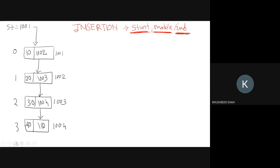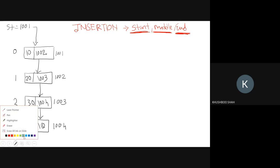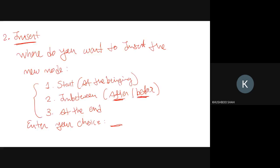Let's start with the first operation — inserting at the beginning. If the user selects option one, at the beginning, what would be the logic? I am planning to add the node at the very start.